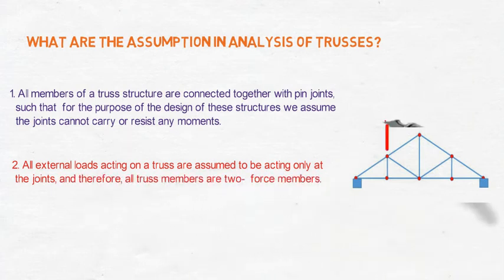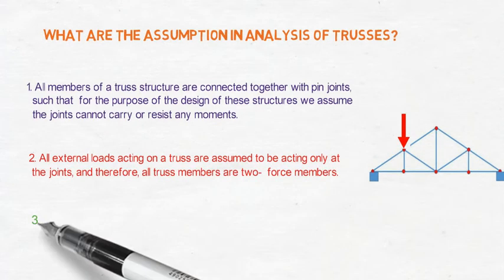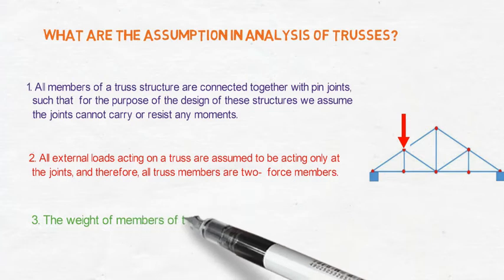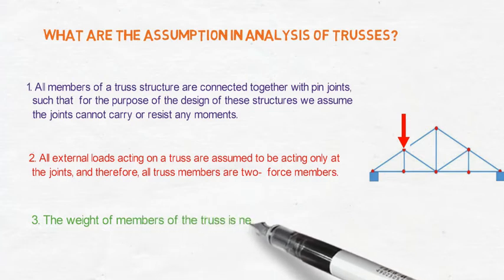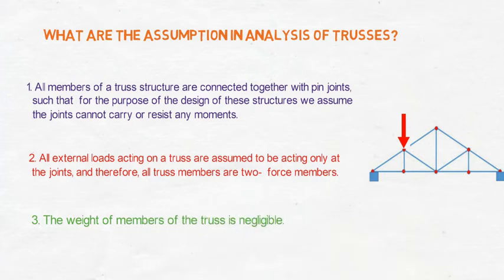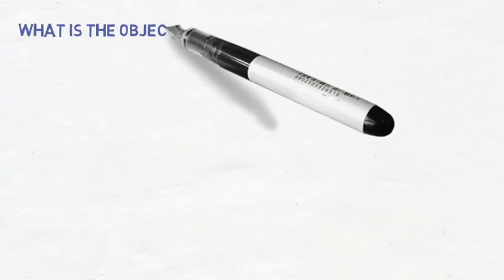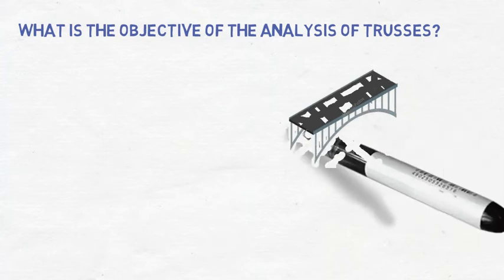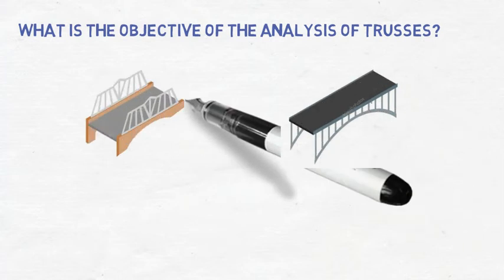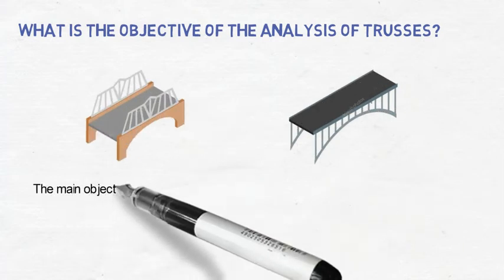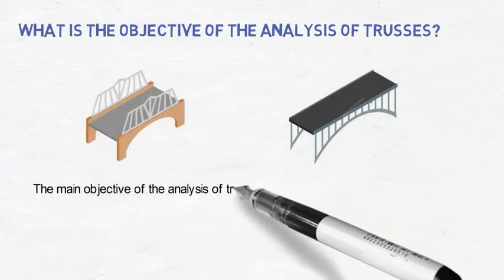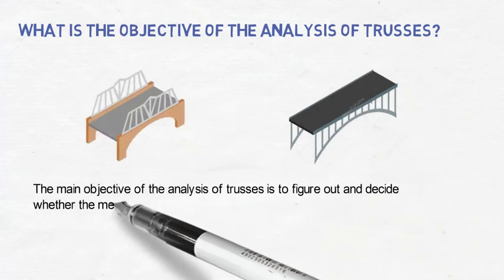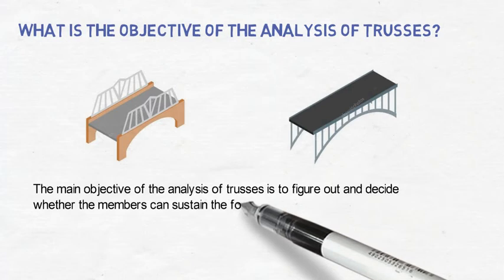Therefore, all truss members are two-force members. Third, the weight of members of the truss is negligible. What is the objective of the analysis of trusses? The main objective of the analysis of trusses is to figure out and decide whether the members can sustain the forces or not.